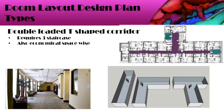Next is the double loaded T-shaped corridor. Double loaded means all rooms face each other — one room in front of the other. This is similar to the standard double loaded corridor, except that the corridor is T-shaped. It requires three staircases to access all corridors and is also economical in terms of space.